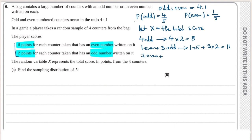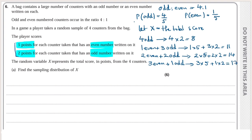The third option is two even counters and two odd counters: 2×5 + 2×2 = 10 + 4 = 14. The fourth option is three even counters and one odd counter: 3×5 + 1×2 = 17. The last option is four even counters: 4×5 = 20. So X can take values 8, 11, 14, 17, and 20.